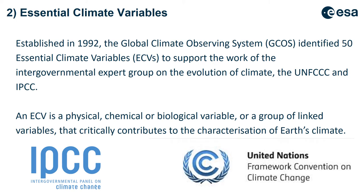To monitor the greenhouse effect and its impact on the climate, in 1992 the Global Climate Observing System identified 50 essential climatic variables that we need to monitor to support the work of the UNFCCC and the IPCC. An essential climatic variable is a physical, chemical, or biological variable — or group of linked variables — that critically contributes to the characterization of Earth's climate.